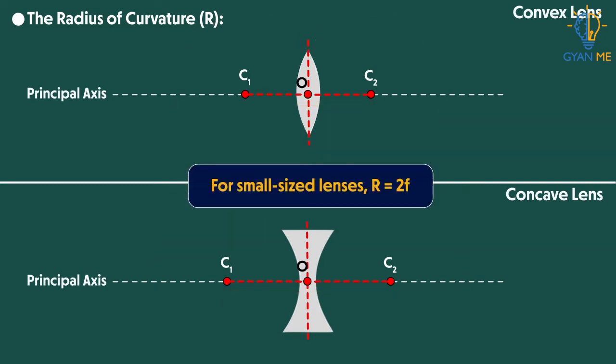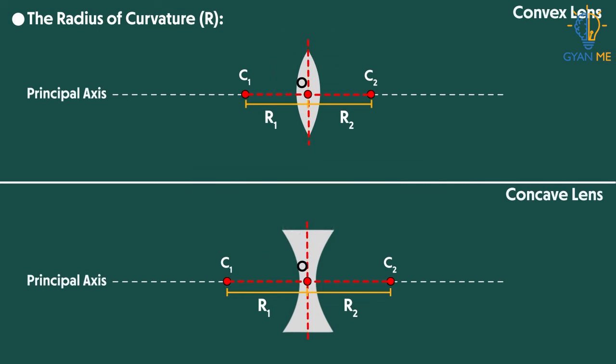For small sized lenses, R is approximately double the focal length. Thus, instead of calling this point as C, we call it as 2F in the lenses. Which means that this distance between optical center O and point C is double the focal length, which is distance between O and point F.